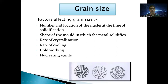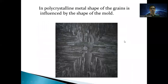If the number of grains is more, then the grain size will be larger, and if the number of grains is less, then the grain size is minimum. This is the polycrystalline metal — the shape of the grains is influenced by the shape of the mold. The grain size will be determined by the microstructure or the grains of the crystal.